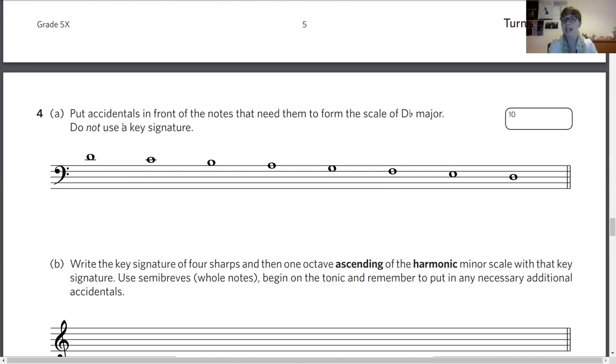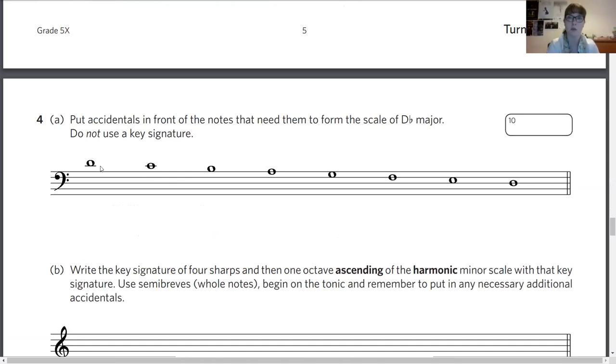Question four: Put accidentals in front of the notes that need them to form the scale of D flat. Do not use a key signature. Those are the key words you should always be looking out for. They like to catch you out with use or do not. In this case, we need to remember how many flats are in D flat major. It's going to be at least B flat, E flat, A flat and D flat. But are there more? That's up for you to remember. Use your circle of fifths. You should have a copy of the circle of fifths, up on your wall somewhere, on your front door, in your kitchen. Or work it out again.